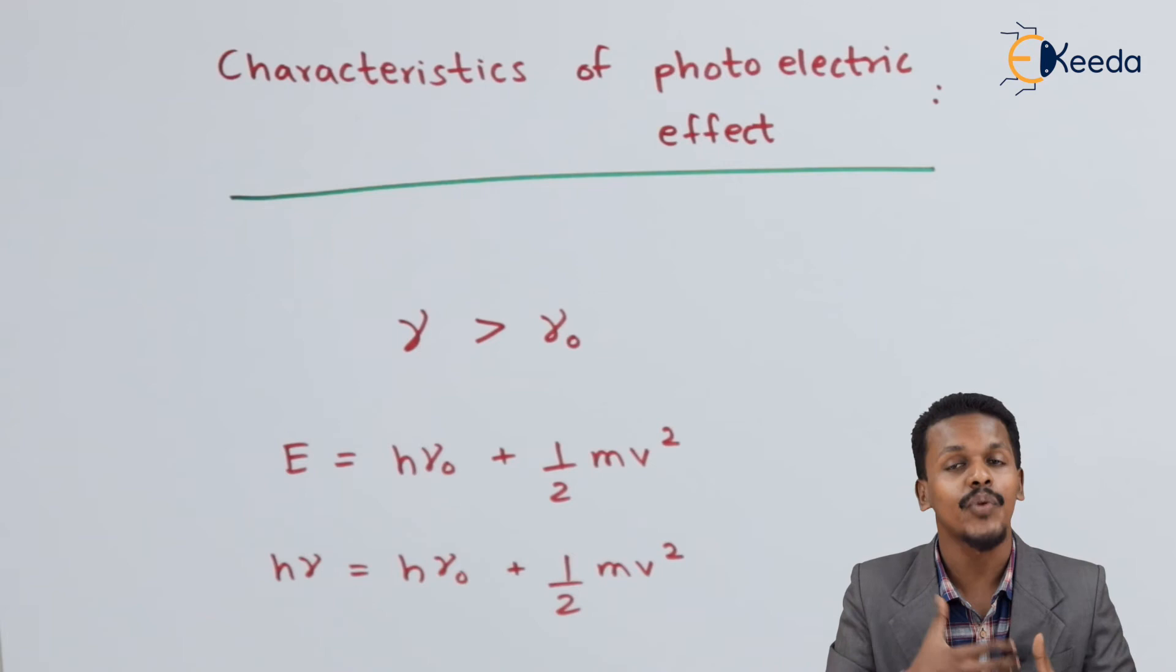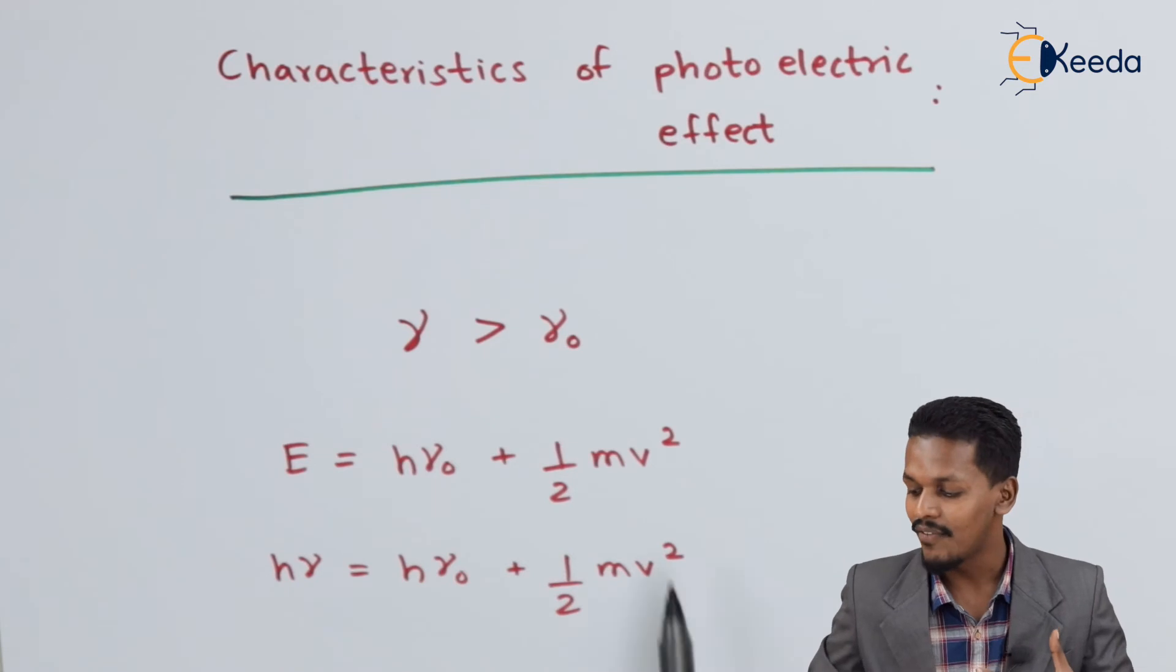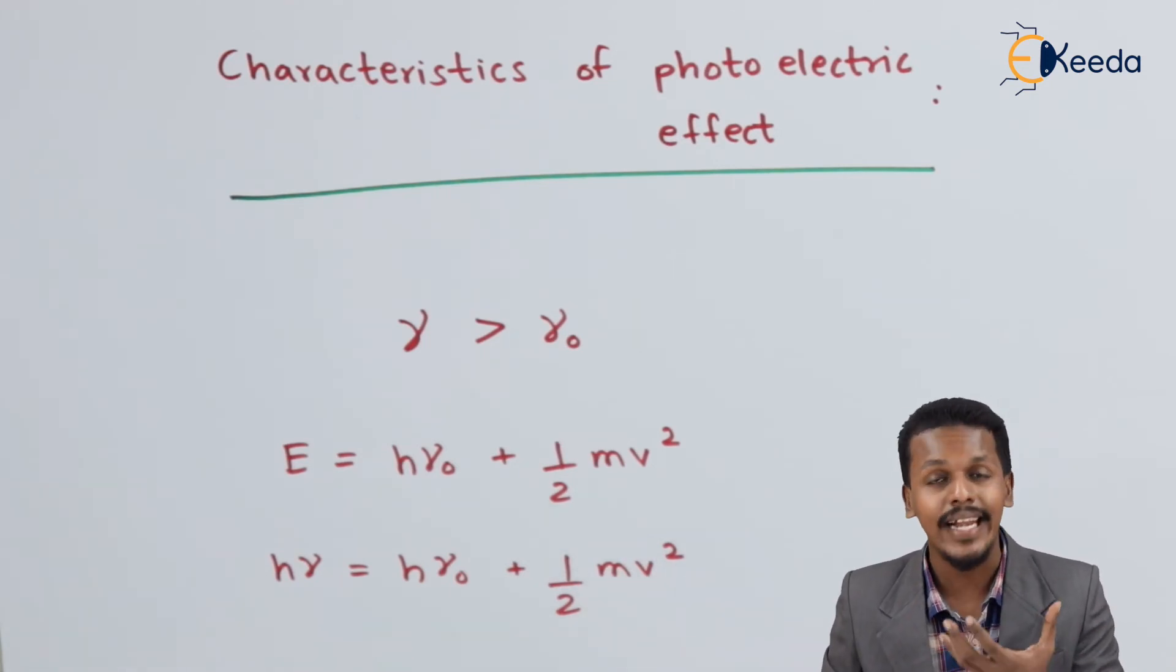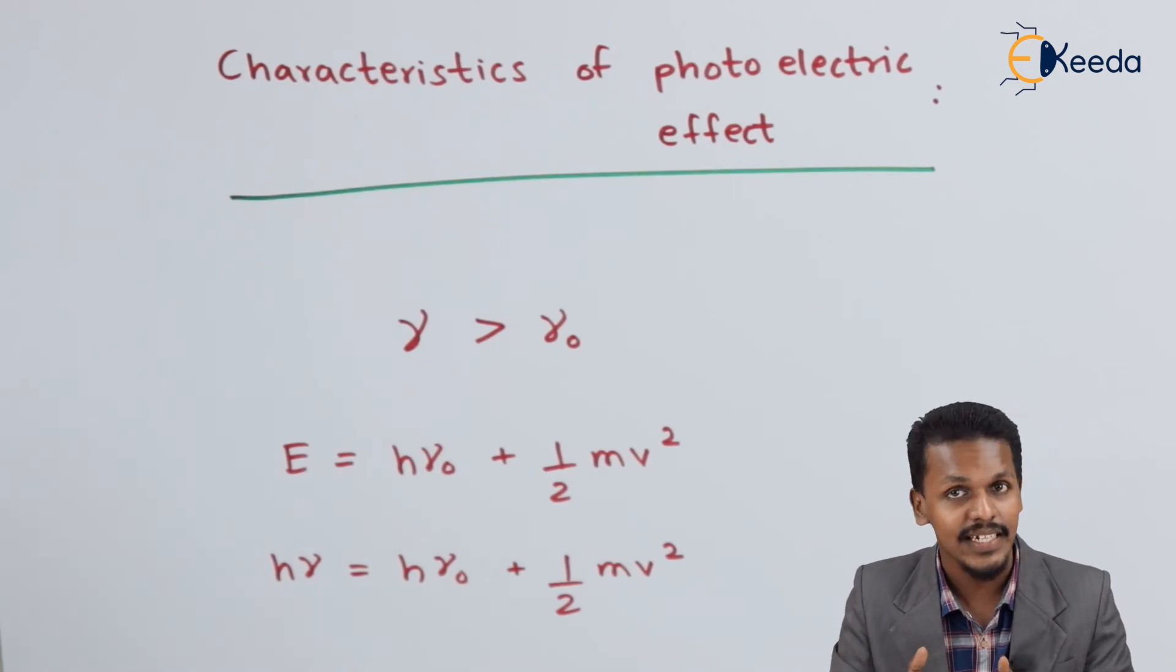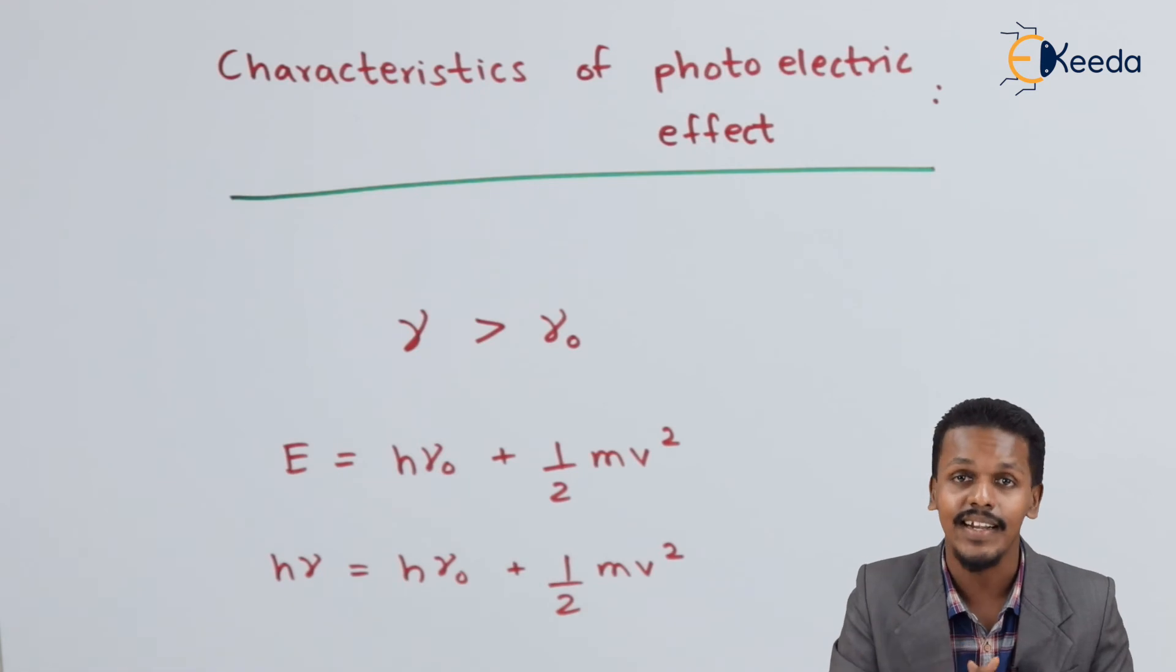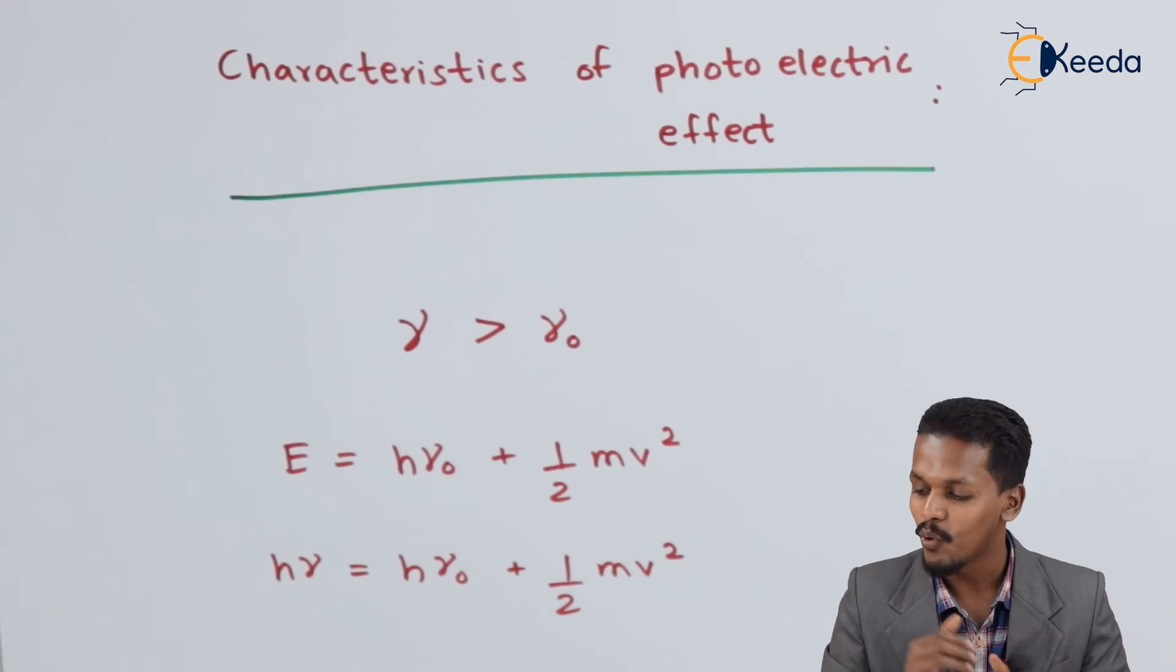Suppose if we increase the frequency of the incident beam, then not only will electrons be removed, but they will also have kinetic energy. This clearly indicates that the photoelectric effect is not dependent upon intensity, but depends on the frequency of the light incident on the metal sheet. This is the characteristic of the photoelectric effect.